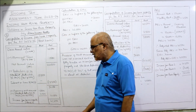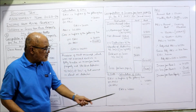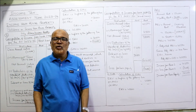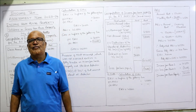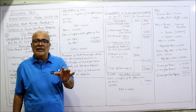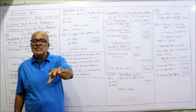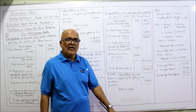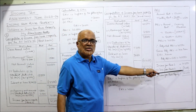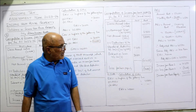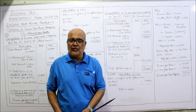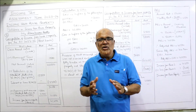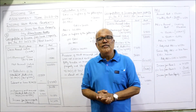Income from the first house is 41,650 and there is a loss from the second house of 3,400. Under the intra-head set-off provision, within the same head of income, a loss from one source can be set off against income from another source. So the loss of 3,400 is deducted from 41,650, giving a net income from house property of 38,250. This concludes problem number 9. Nine problems have been completed so far, and we will continue with the next problem in the next video.